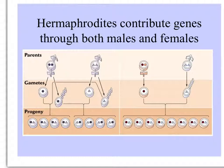A parent with both sexes can contribute genes through both its female and male function. On the left, we see hermaphrodites producing both kinds of gametes, combining in all those ways. On the right, two distinct single-sex individuals producing gametes which combine to produce offspring with recombination and independent assortment of genes, making them genetically distinct from their parents.